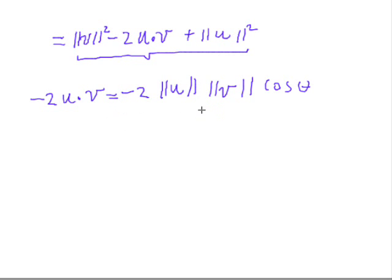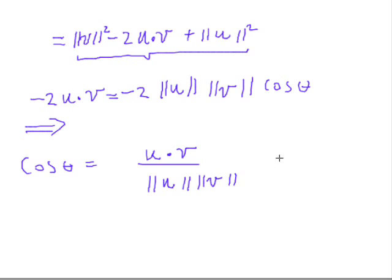We will actually solve this equation for cosine theta, and this is going to imply then that cosine theta is equal to u dot v over the norm of u times the norm of v, which will be precisely what we wanted. Thank you for listening.